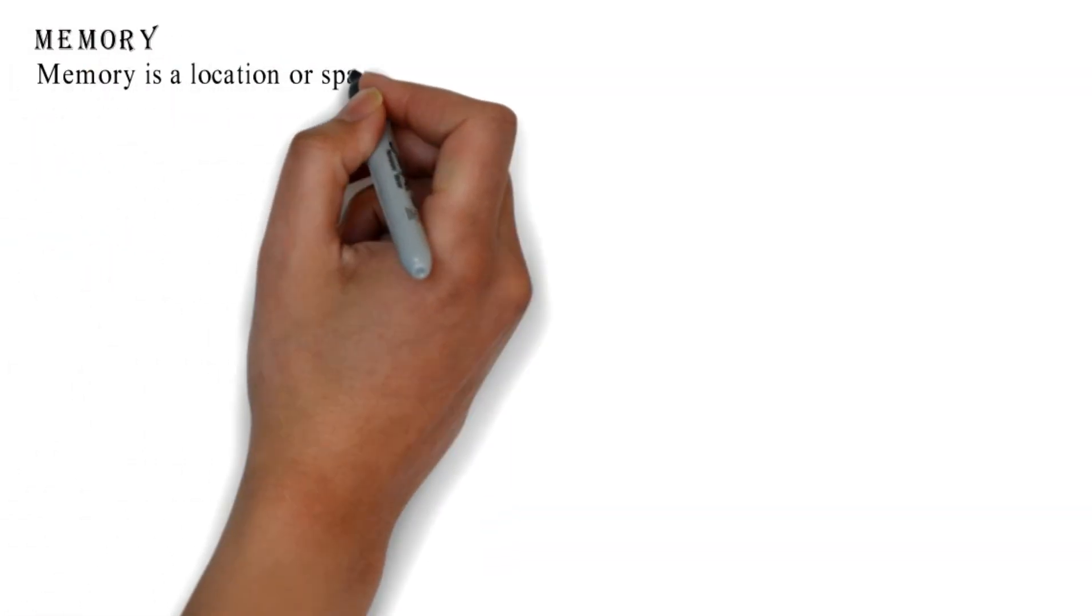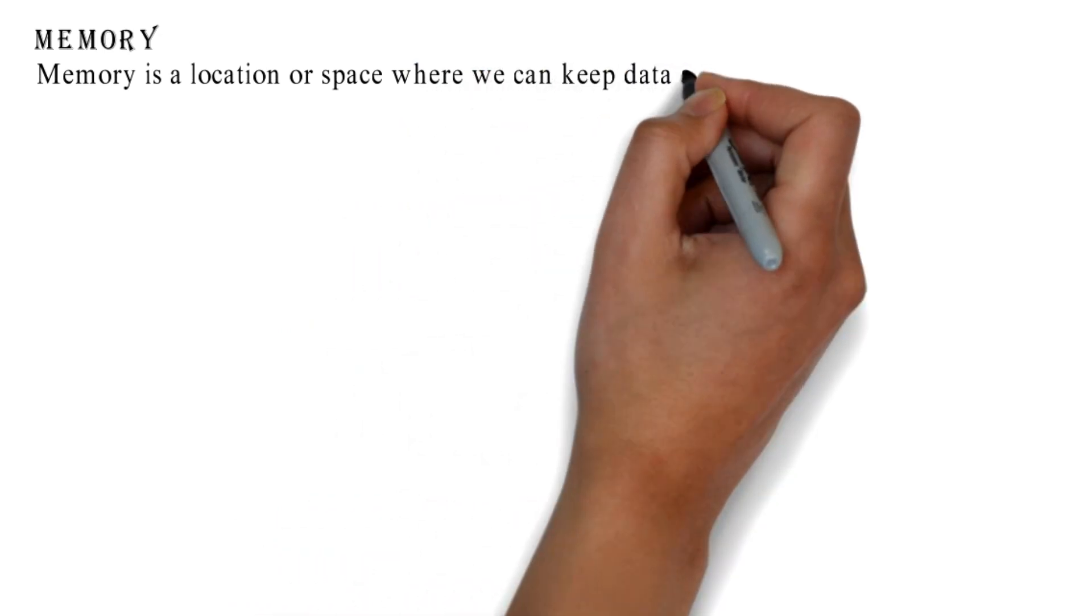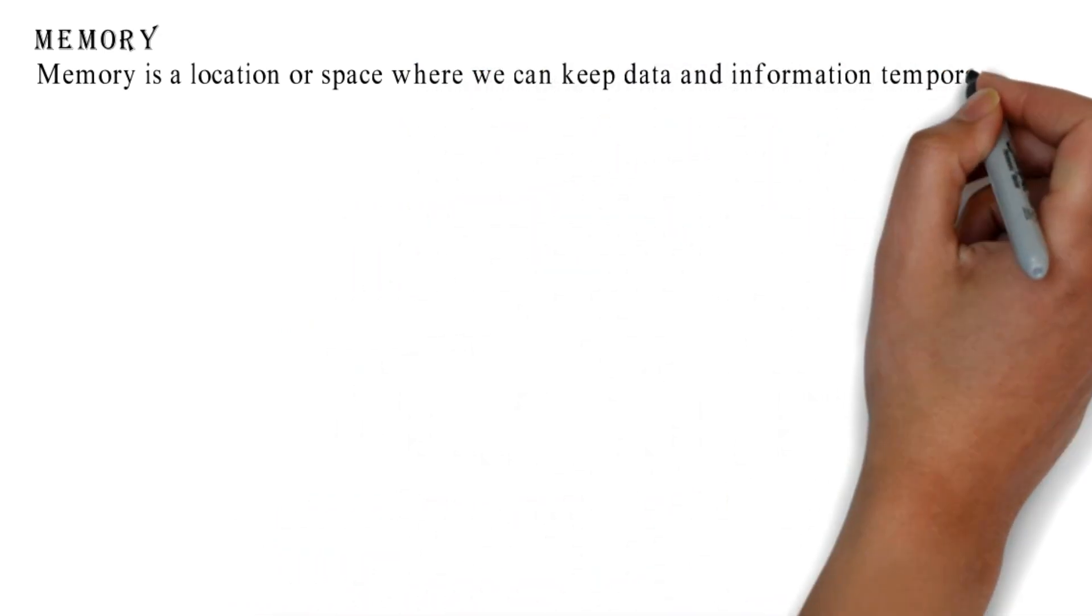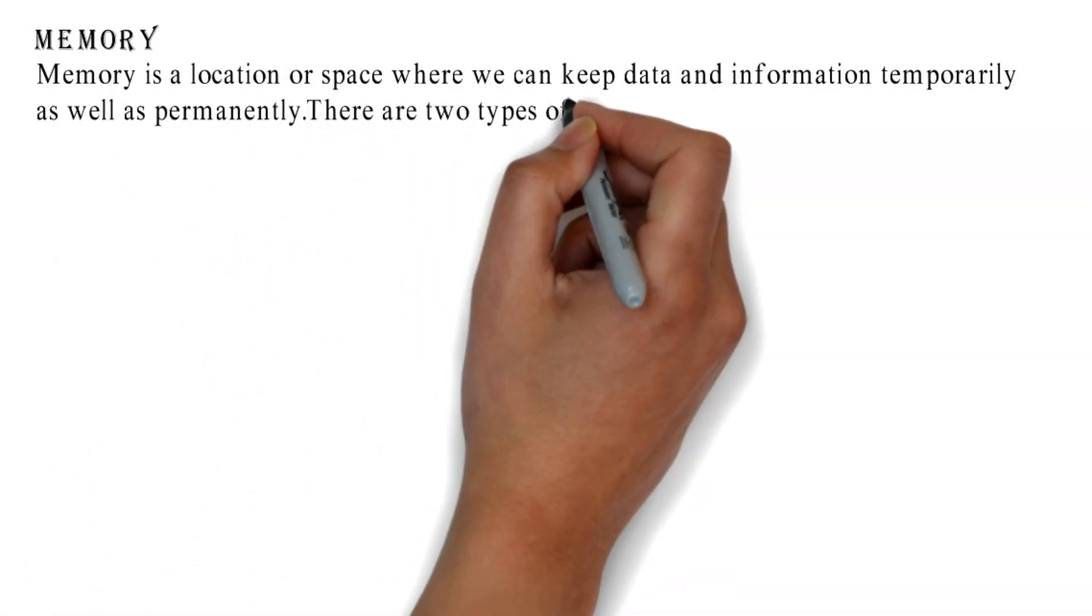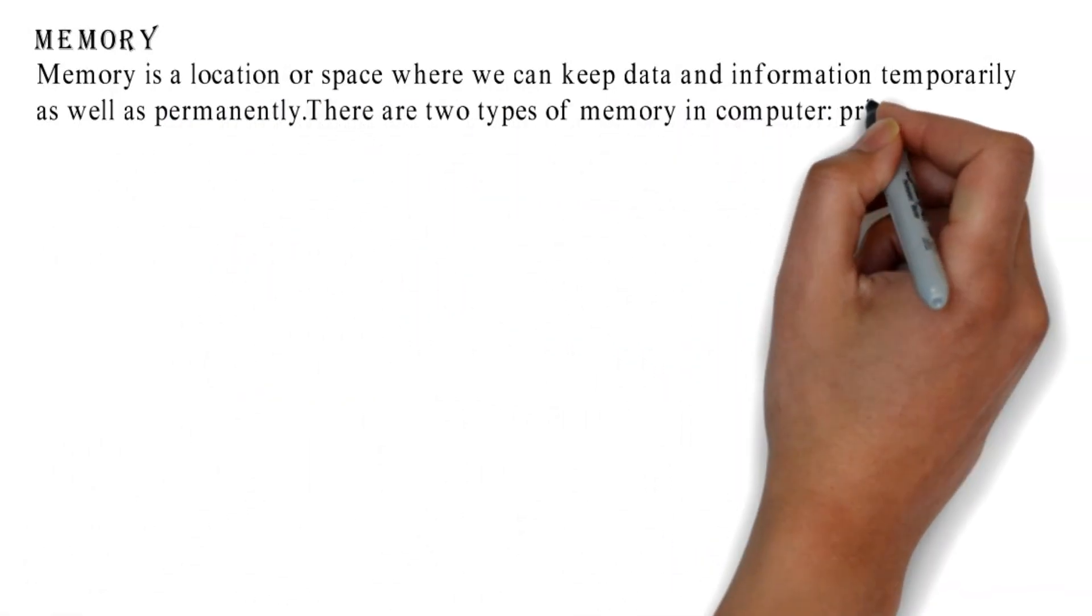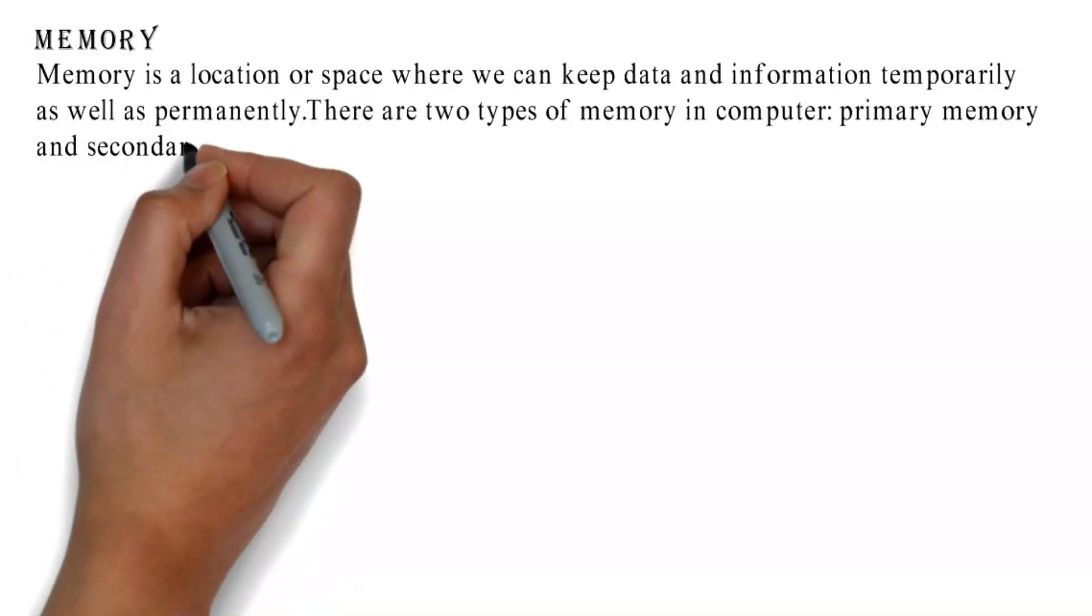Memory is a location or space where we can keep data and information temporarily as well as permanently. There are two types of memory in computer: primary memory and secondary memory.